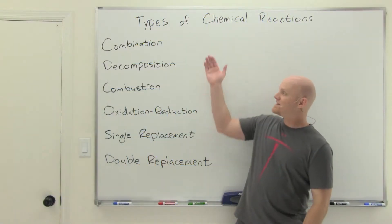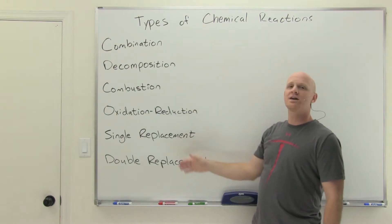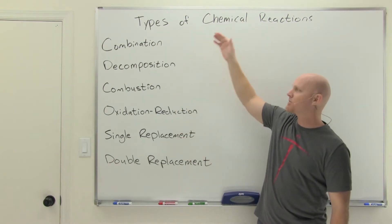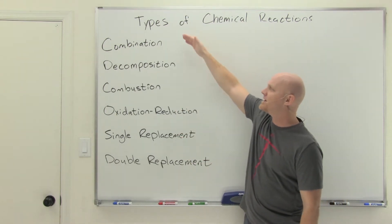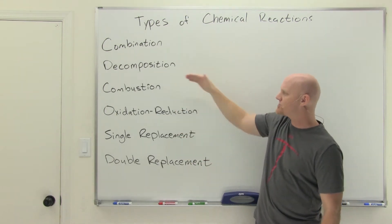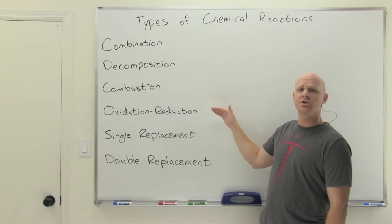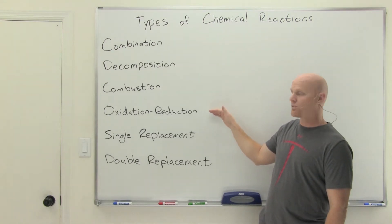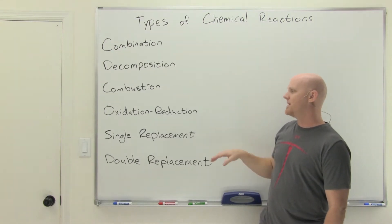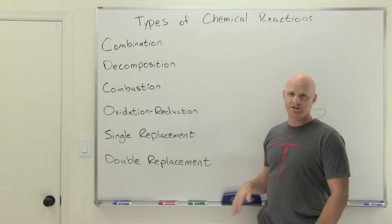These are pretty much the most common types of chemical reactions: combination, decomposition, combustion, oxidation-reduction — often called redox reactions for short — single replacement, and double replacement.